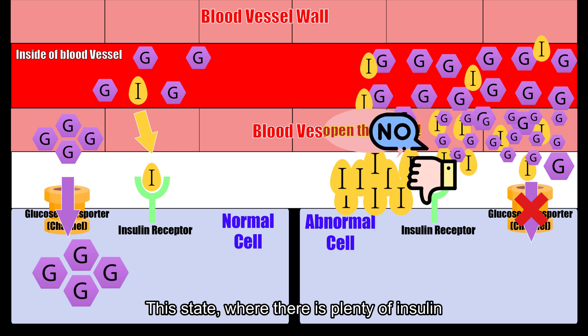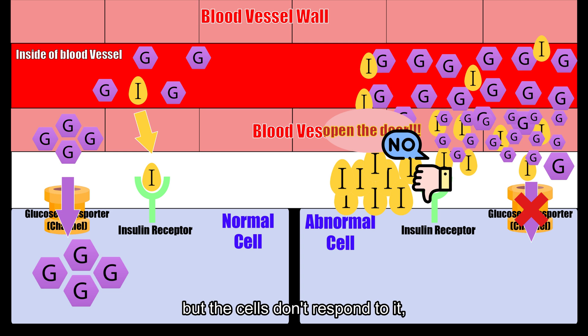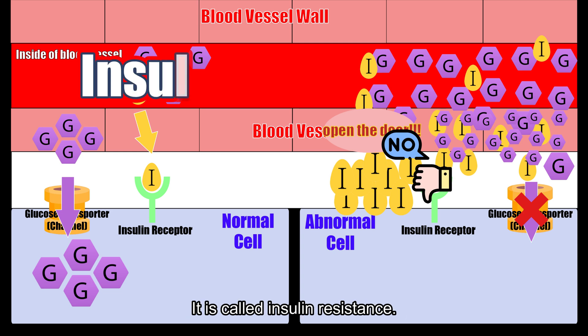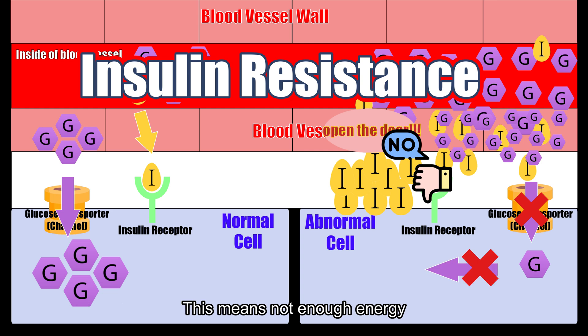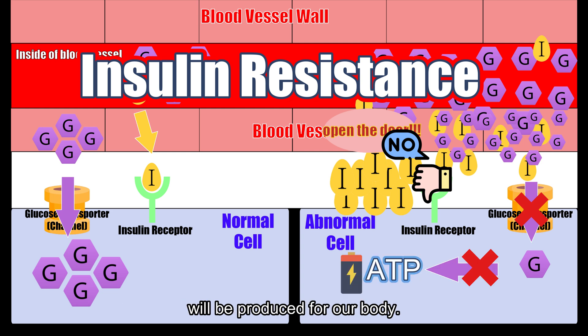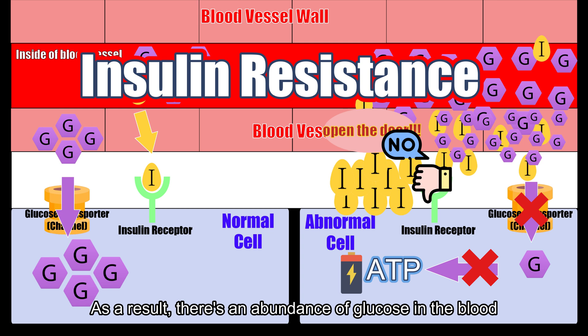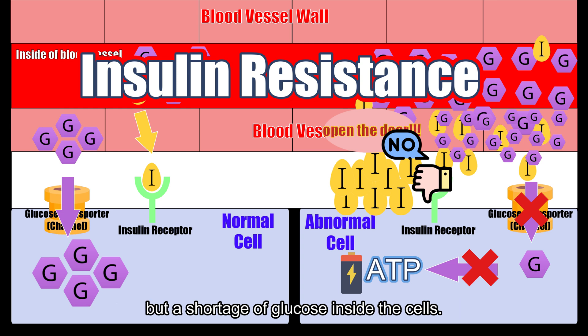This state where there is plenty of insulin but the cells don't respond to it is called insulin resistance. With the channel blocked like this, let's assume only 1 unit of glucose makes it into the cell. This means not enough energy will be produced for our body. As a result, there is an abundance of glucose in the blood but a shortage of glucose inside the cells — it's truly a paradox of abundance amidst scarcity.